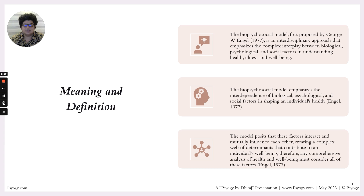In contrast, Engel emphasized in his paper that the manifestation of illness or the upkeep of wellness is a complex interplay between biological, psychological, and social dimensions. The biopsychosocial model emphasizes the interdependence of these three factors in shaping an individual's overall health and well-being, and these dimensions mutually influence each other. Therefore, any comprehensive analysis of health and well-being must consider all these factors.